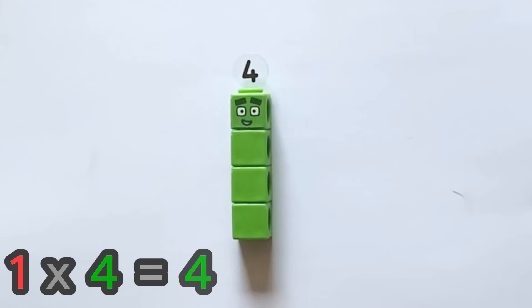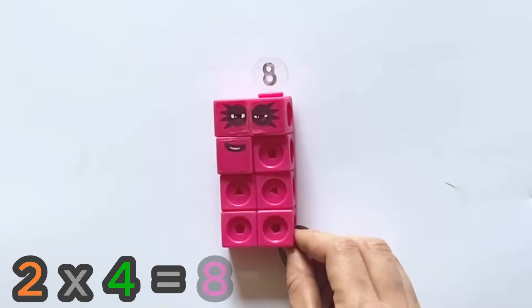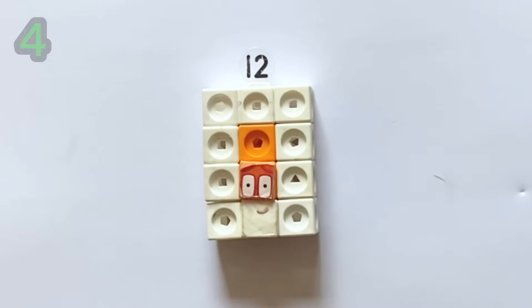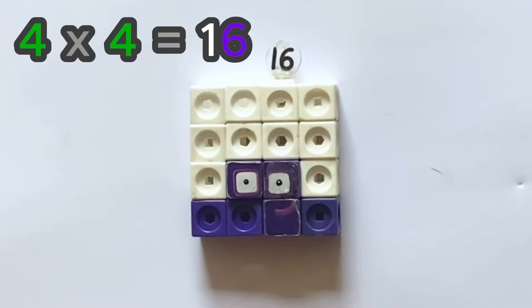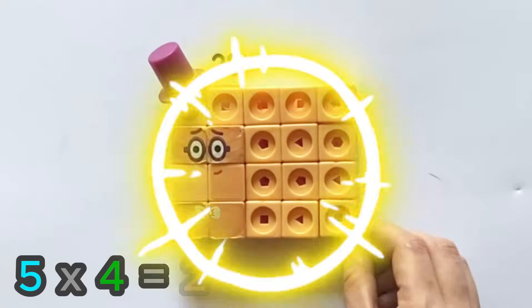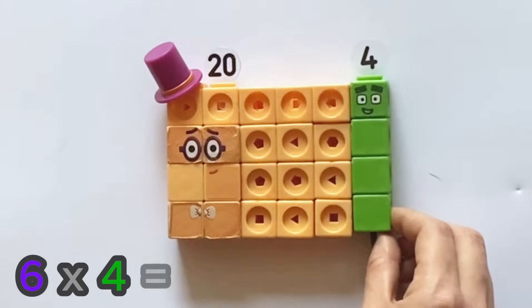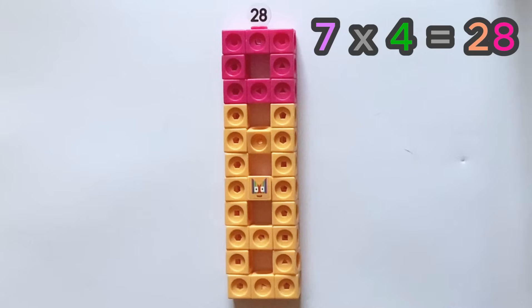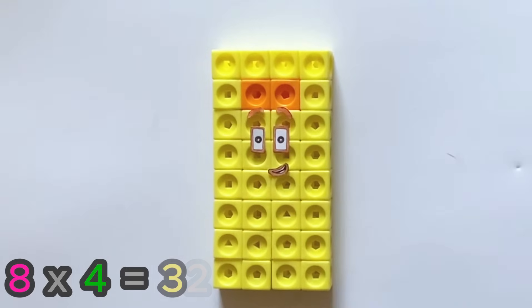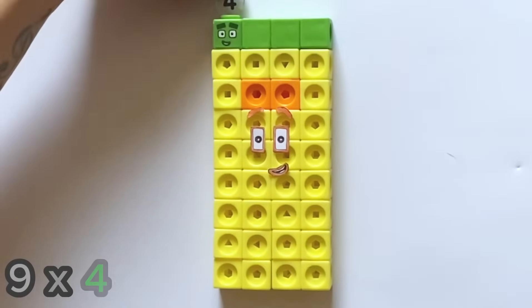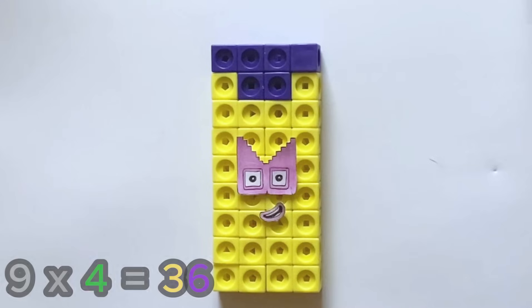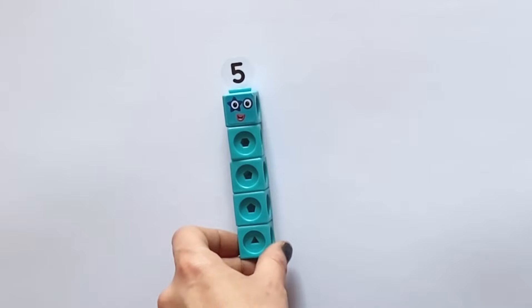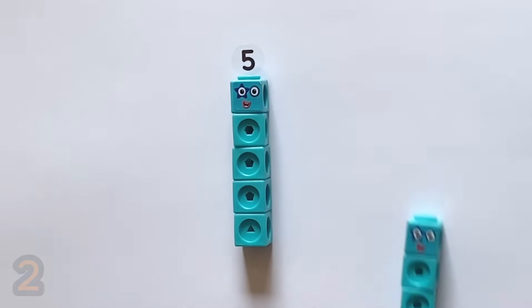1 lots of 4 is 4. 2 lots of 4 are 8. 3 lots of 4 are 12. 4 lots of 4 are 16. 5 lots of 4 are 20. 6 lots of 4 are 24. 7 lots of 4 are 28. 8 lots of 4 are 32. 9 lots of 4 are 36.